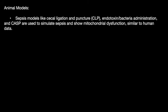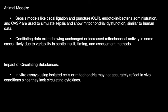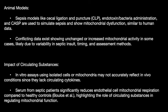These theories were put to test in animal models. Sepsis models have been developed — such as cecal ligation and puncture — which develop a sepsis-like condition. However, we have conflicting data showing unchanged or increased mitochondrial activity in some cases, possibly due to variability in the septic insult, timing, and assessment methods. Importantly, in vitro assays using isolated cells or mitochondria may not accurately reflect in vivo conditions since they lack circulating cytokines. Serum from septic patients has been shown to significantly reduce endothelial cell mitochondrial respiration compared to adult controls, highlighting the role of circulating substances.